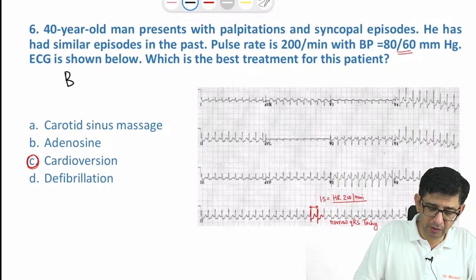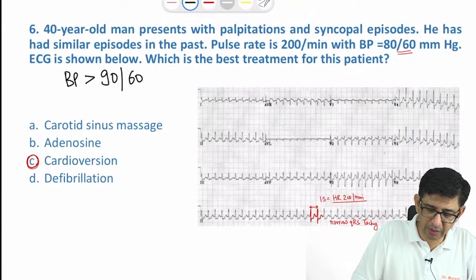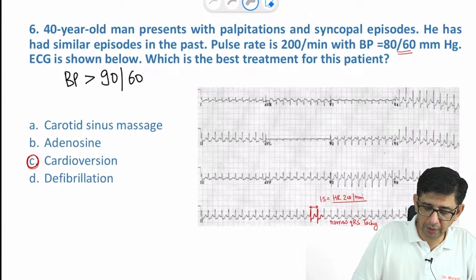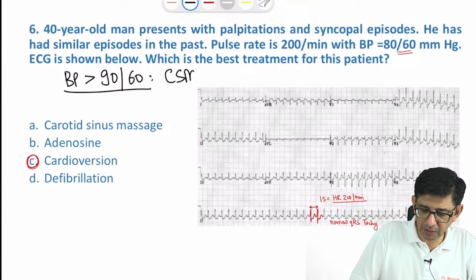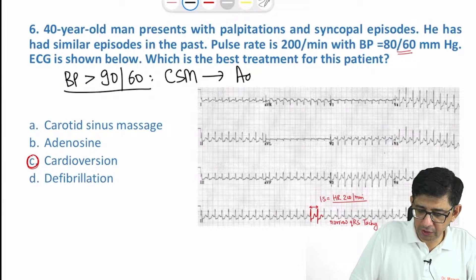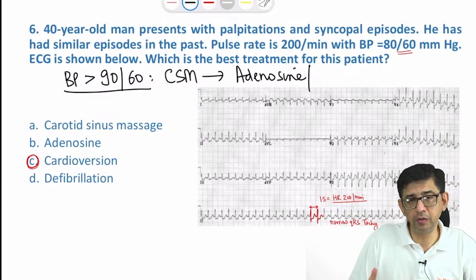If the BP is more than 90 by 60, then you would be using carotid sinus massage. After carotid sinus massage, you can use adenosine.